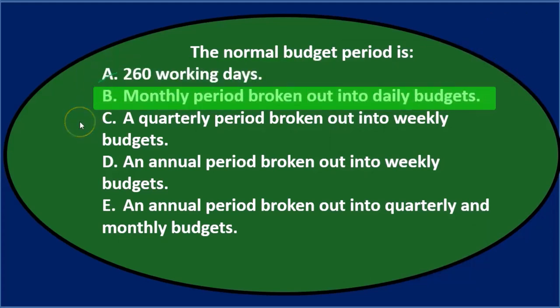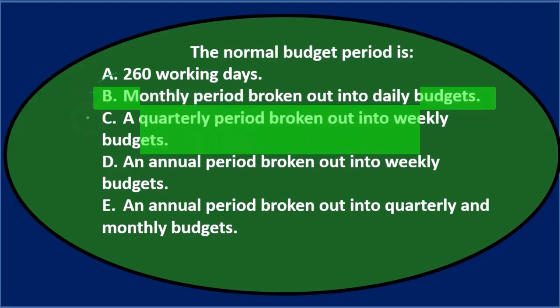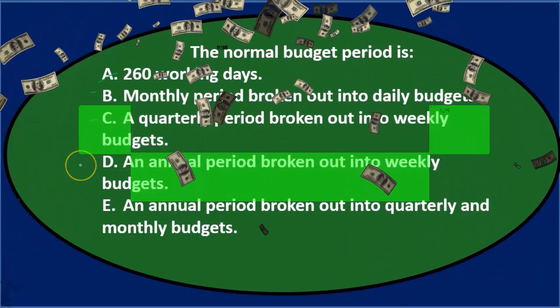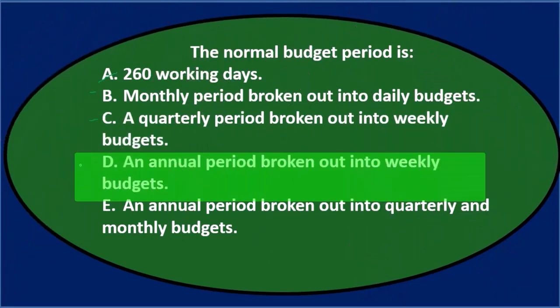B says a monthly period broken out into daily budgets — a monthly period, I'll keep it for now. C says a quarterly period broken out into weekly budgets — quarterly, eh. D says an annual period broken out into weekly periods. Annual is what I would kind of expect, so I'll keep that for now.